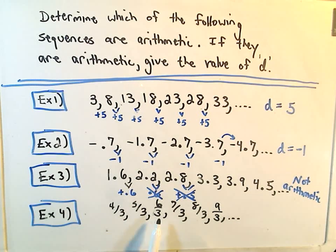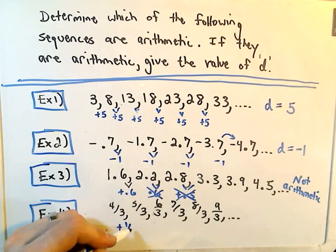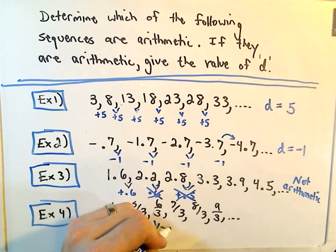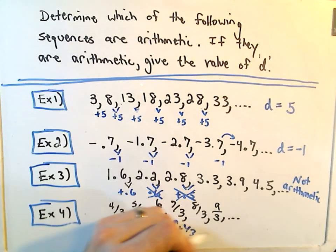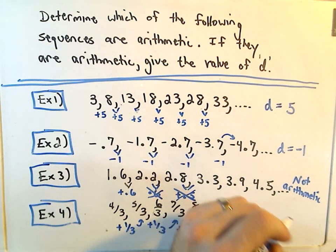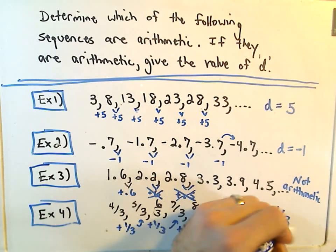And we go from 4 thirds, 5 thirds, 6 thirds, 7 thirds, 8 thirds, 9 thirds. So it looks like we're adding the value of 1 third each time to get to the term after that one. So again, we would say this one is arithmetic, and our d value would equal positive 1 third.